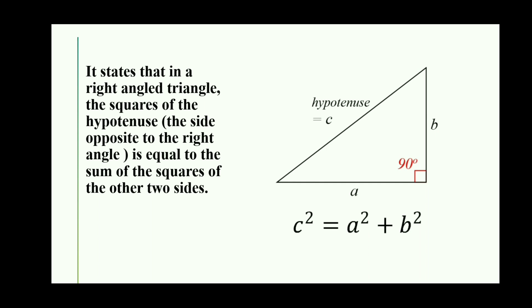In this diagram, c² is the hypotenuse, a² is the base, and b² is the perpendicular.